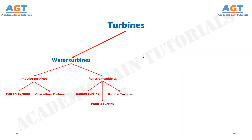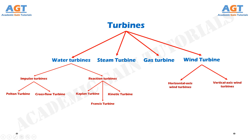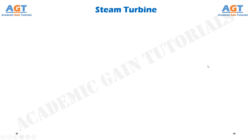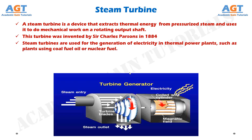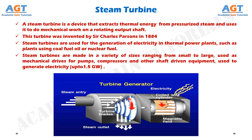We have discussed the different types of water turbines. Now we will learn about other types of turbines, including steam turbine, gas turbine, and wind turbine. A steam turbine is a device that extracts thermal energy from pressurized steam and uses it to do mechanical work on a rotating output shaft. It was invented by Sir Charles Parsons in 1884. Steam turbines are used for electricity generation in thermal power plants using coal, fuel oil, or nuclear fuel. They range from small mechanical drives for pumps and compressors to large units capable of generating up to 1.5 gigawatts.